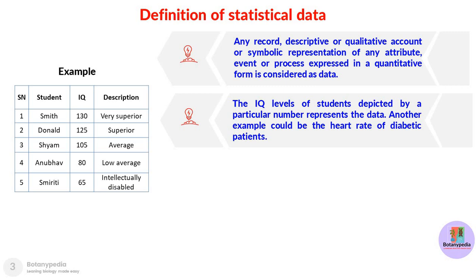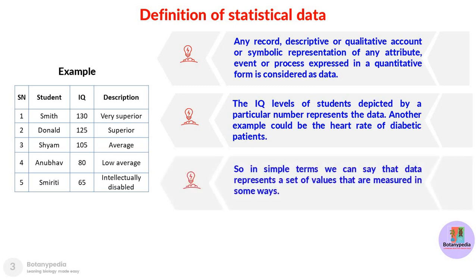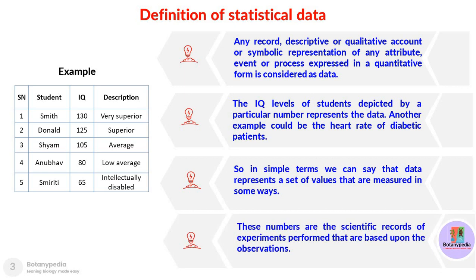Another example could be the heart rate of diabetic patients, and different types of comparisons can be made with that kind of data. Sometimes when recording data it may not be in number form — for example, when taking interviews or surveys where answers are either yes or no, that kind of data is known as descriptive or qualitative data. In simple terms, data represents a set of values measured in some way; these numbers are the scientific records of experiments based upon observation.